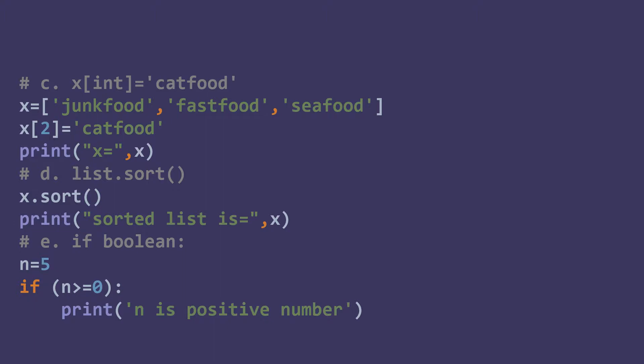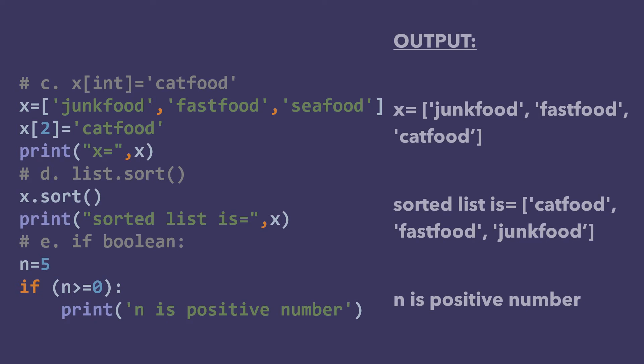To demonstrate this, let's say x is a list having three string values. Here I am assigning x[2] = 'cat food', which means cat food will be assigned to index number 2 of list x. You can see cat food is assigned at index number 2 of list x.